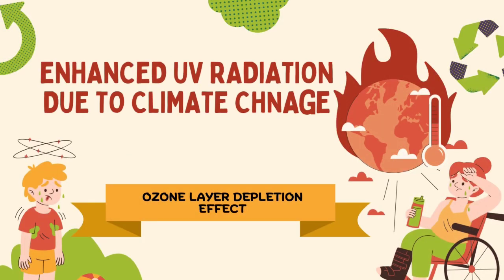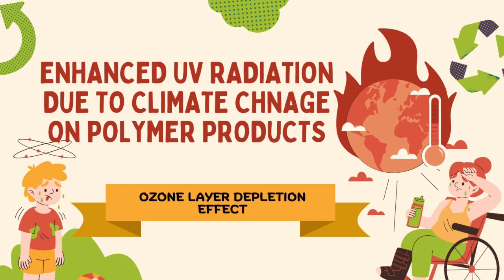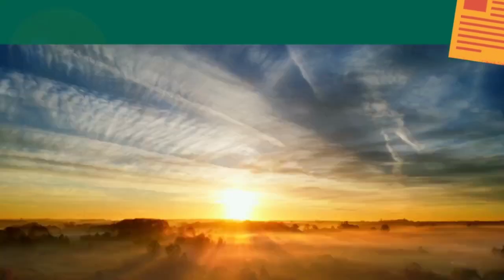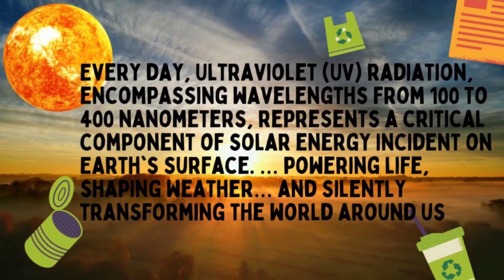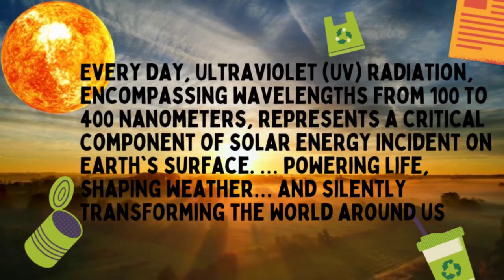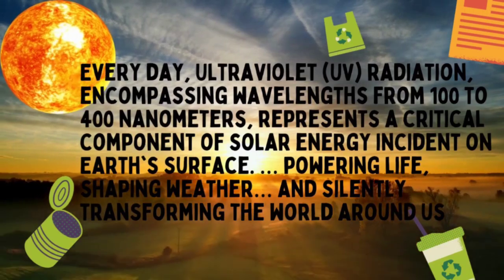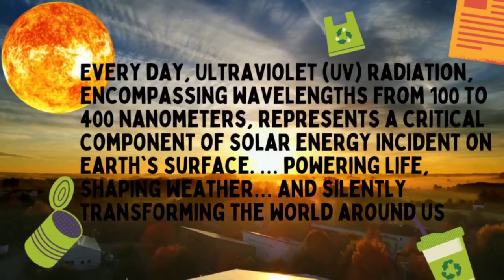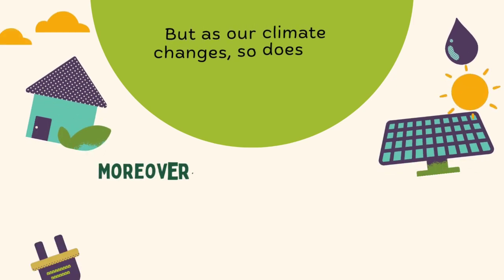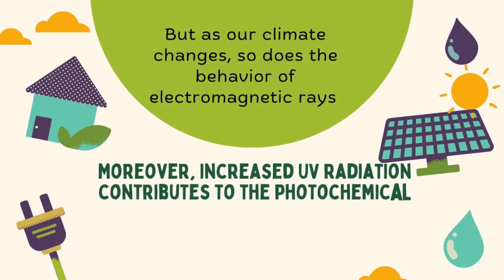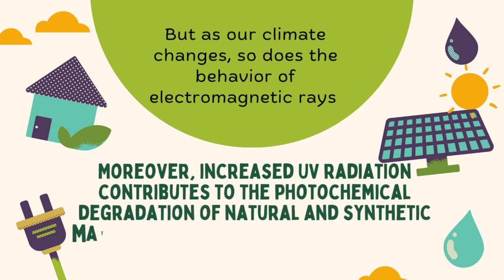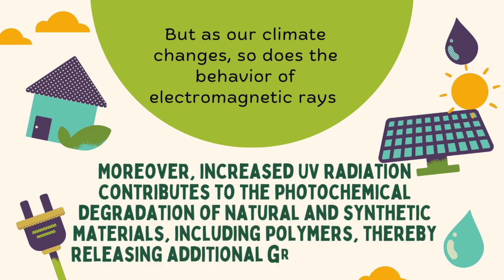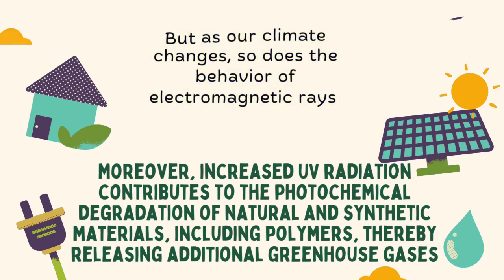Enhanced UV Radiation Due to Climate Change on Polymer Products: Ozone Layer Depletion Effect. Everyday UV radiation, encompassing wavelengths from 100 to 400 nm, presents a critical component of solar energy incident on Earth's surface, powering life and shaping weather. But as our climate changes, so does the behavior of electromagnetic rays. Moreover, increasing UV radiation contributes to the photochemical degradation of natural and synthetic materials including polymers, thereby releasing additional greenhouse gases.